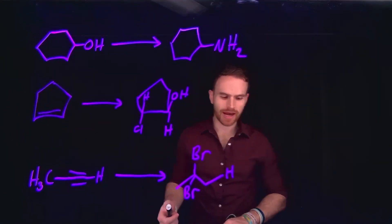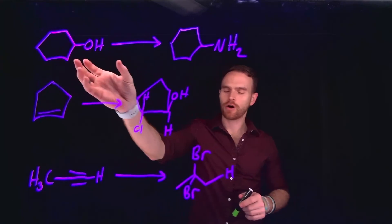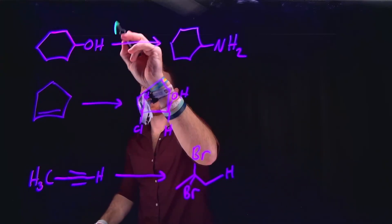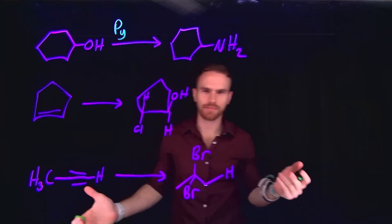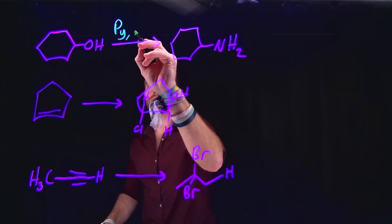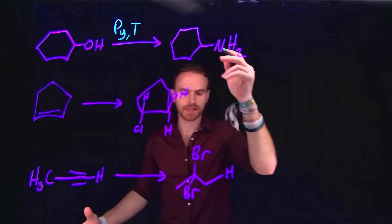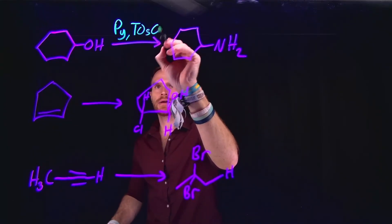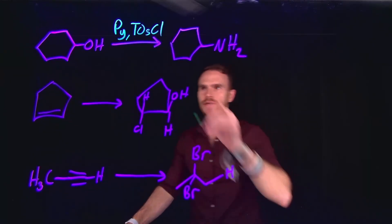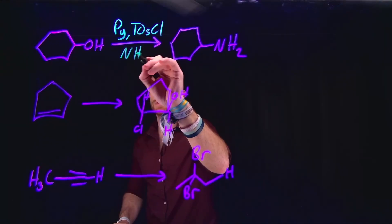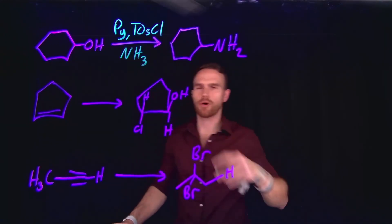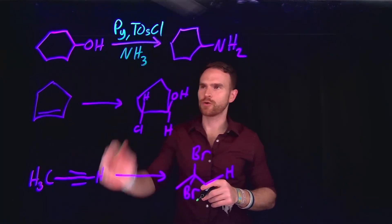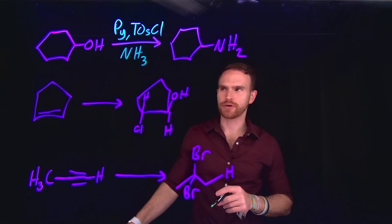For the next reaction, we need to consider turning an alcohol into a primary amine. In order to do this, we're going to use pyridine — indicated by Py — tosyl chloride, sometimes abbreviated as TOS chloride, and then ammonia. The ammonia is where we're going to convert our alcohol into an amine. These are the reaction conditions for turning alcohols into primary amines.